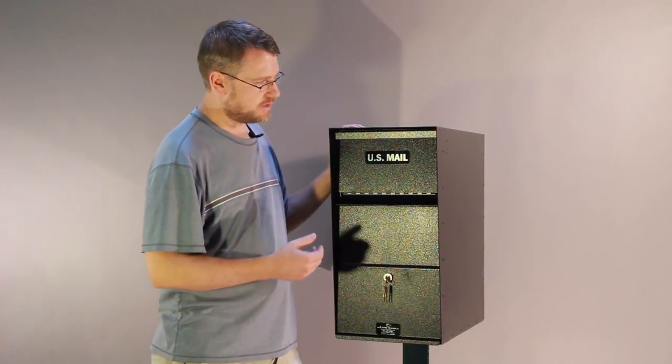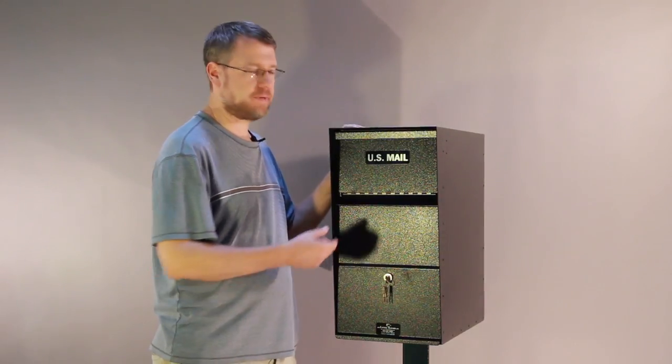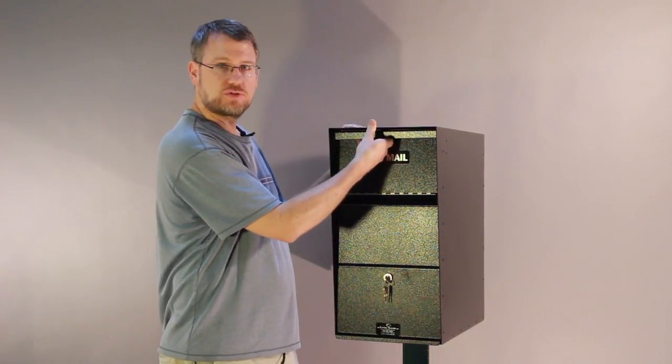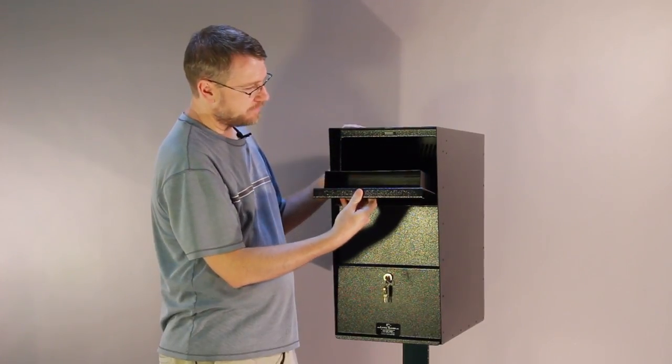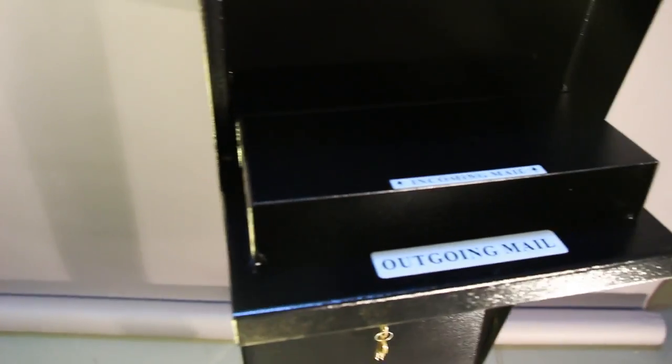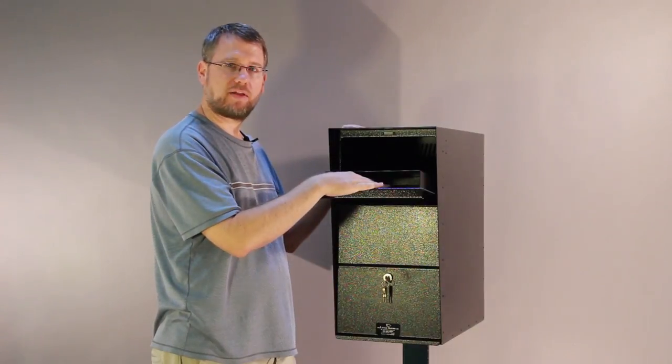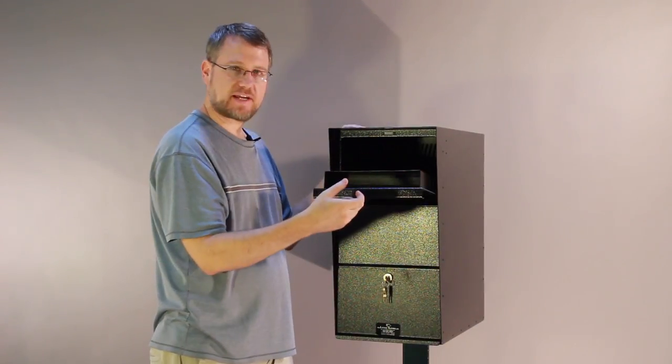First, as you notice the name of it is Locking Mailbox with Hopper Door. When your postal carrier opens this to drop the mail in, there's two things he's going to see. First is this outgoing mail tray that's right here, and it does include a flag. So you put your flag up, set your outgoing mail in there, and your postal carrier can take that out.